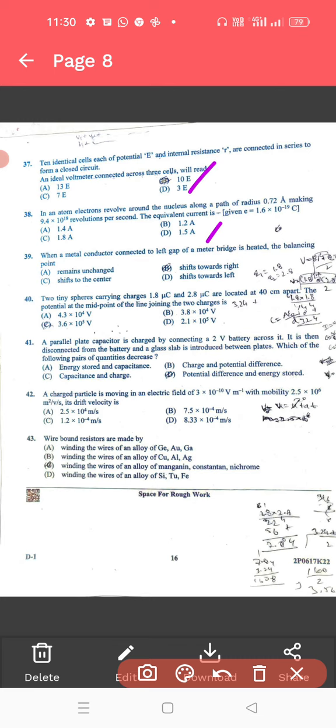39, when a metal conductor. For this, it shifts towards right, is a correct answer. For 40, so it is 2.1 into 10 power 5 is a correct answer.